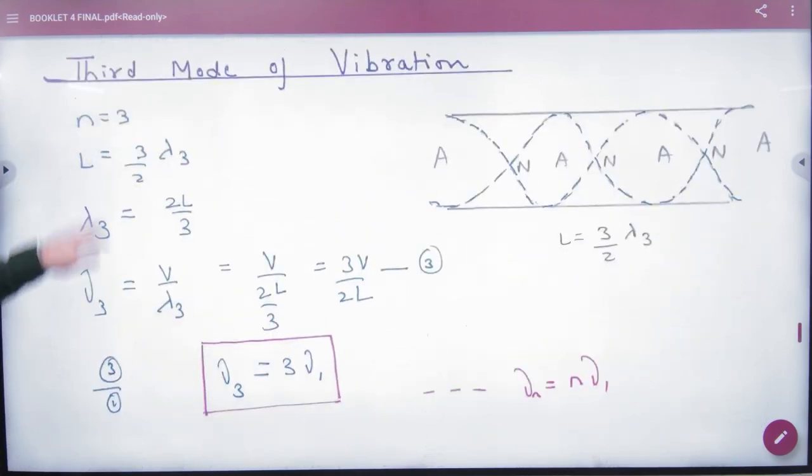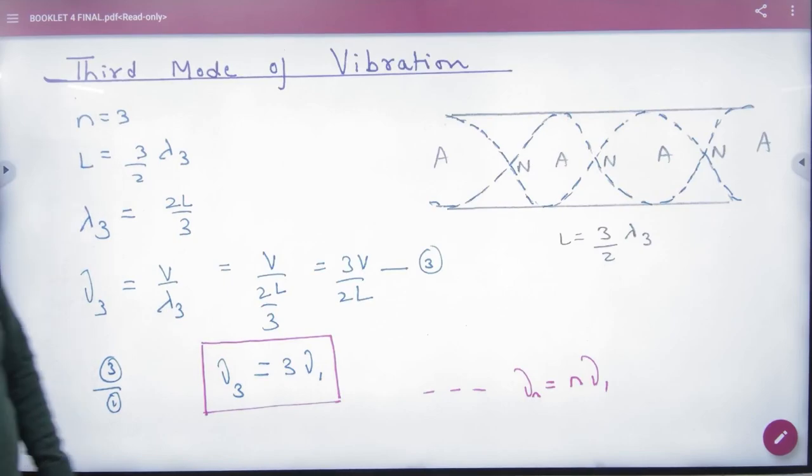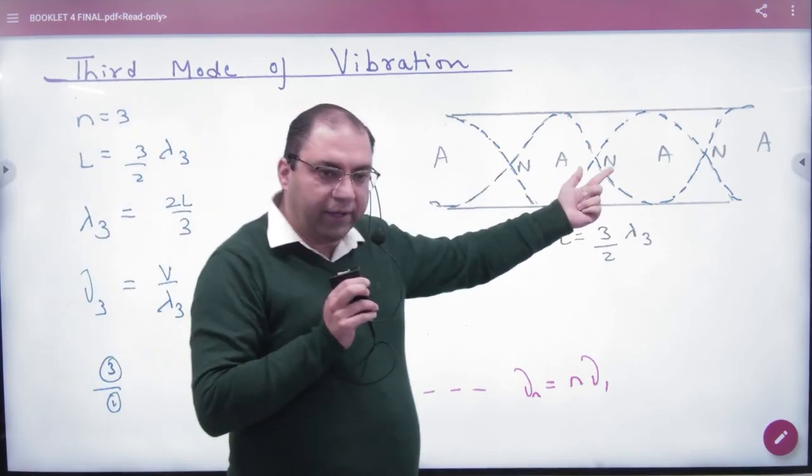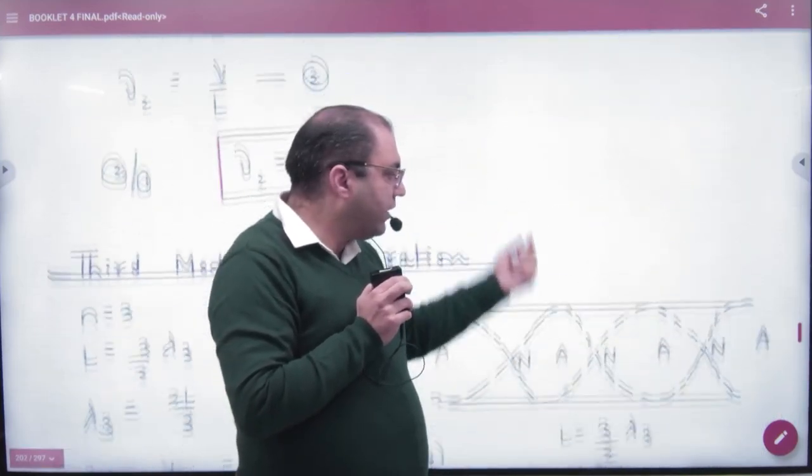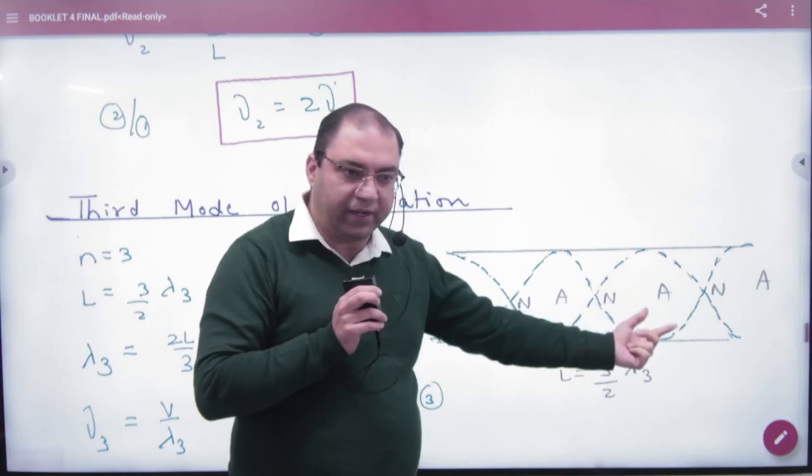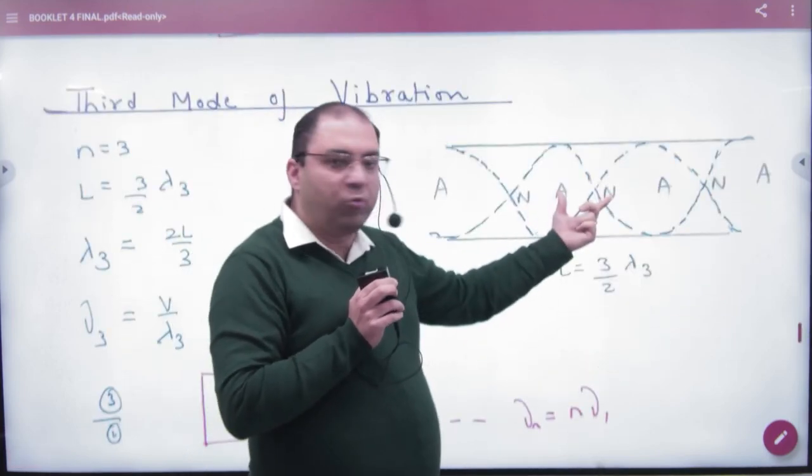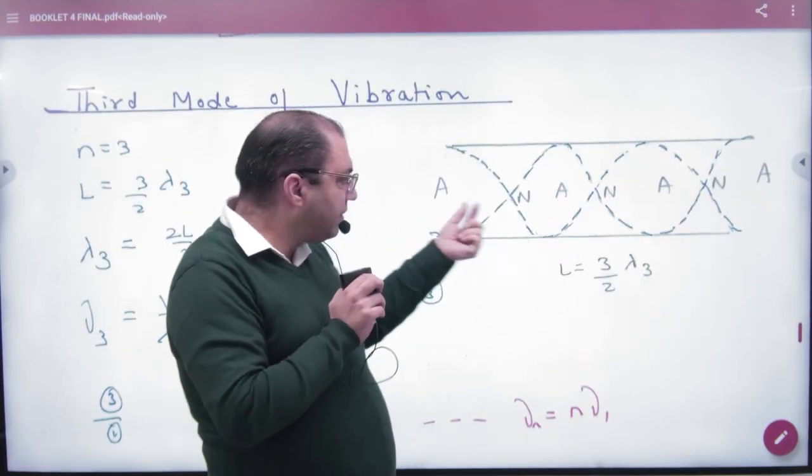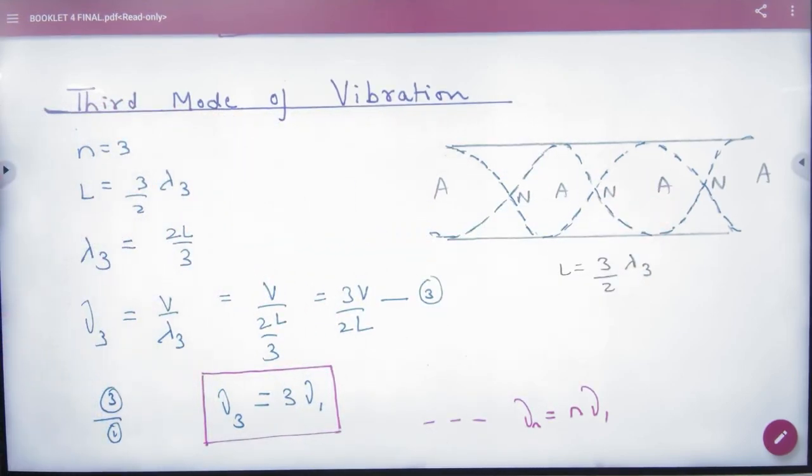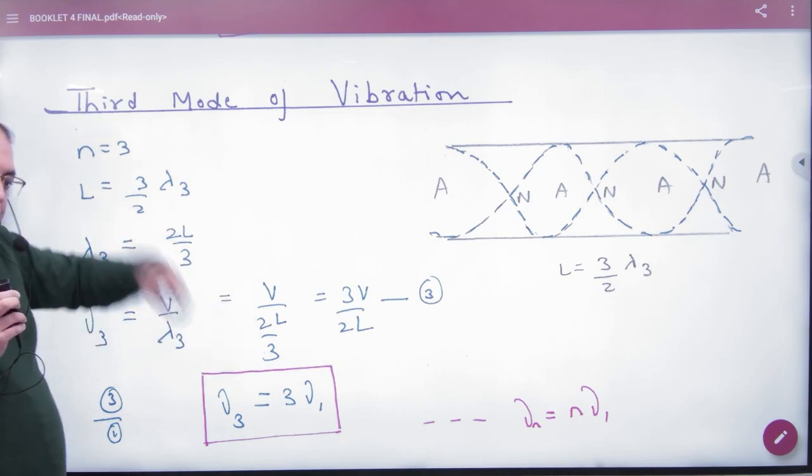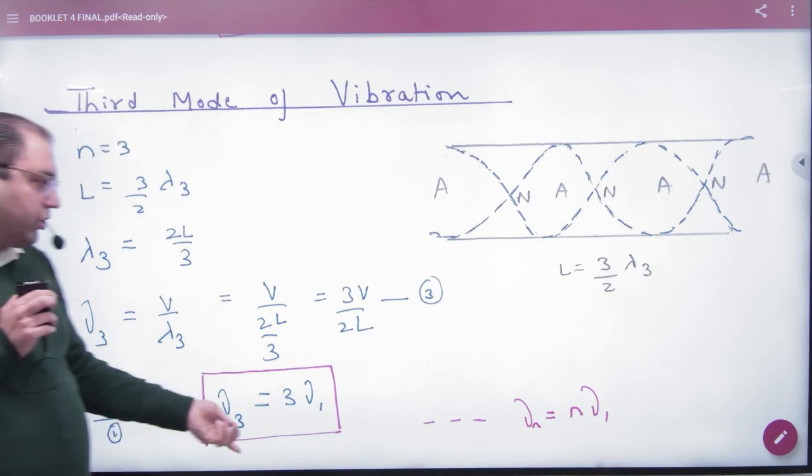Third mode of vibration is 3 put. In the diagram 2 loops are extra. In the first mode this diagram, in the second mode there is one loop extra. Next there is two loops extra in the corner too. So that these two loops mean lambda plus lambda by 4 plus lambda by 4, which is equal to 3 by 2 lambda. Lambda 3 value came. Nu 3 is V by lambda 3. Lambda 3 put, nu 3 nu 1 divided, then nu 3 is 3 into nu 1.